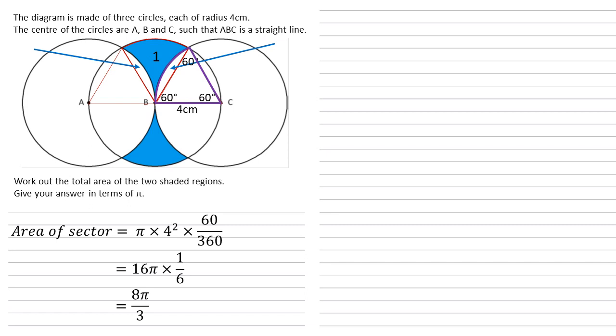We now need to work out the area of the equilateral triangle. Well we've got angles, we know they're 60 degrees, so we're going to use the formula that area equals ½ab sin C. So in this case the area of that triangle is ½ × 4 × 4 × sin 60. Now we need to know that sin 60 is √3/2. So simplifying this gives us the area is 4√3.